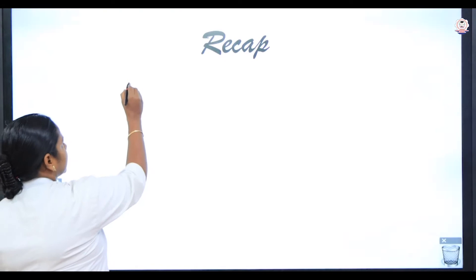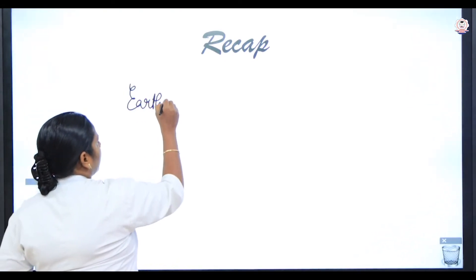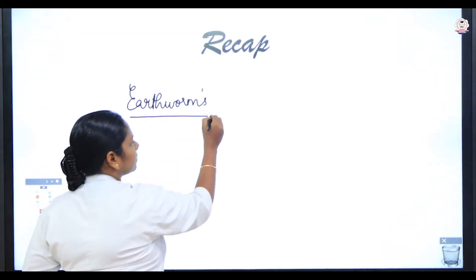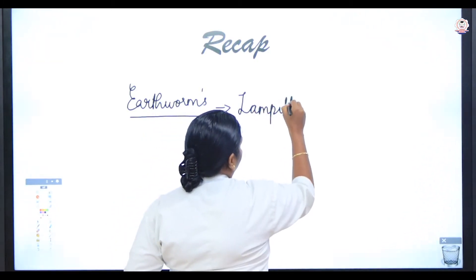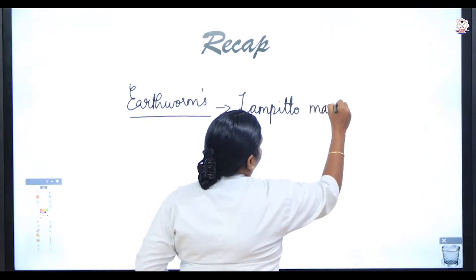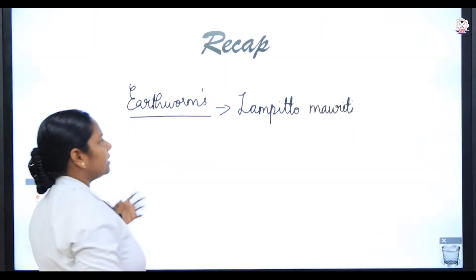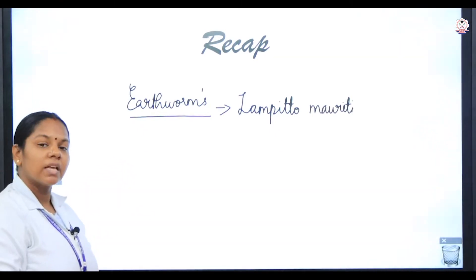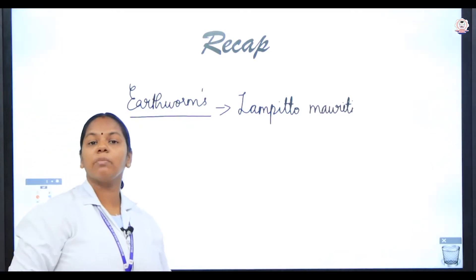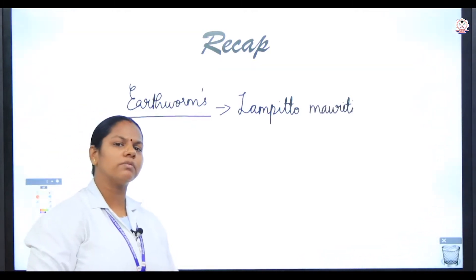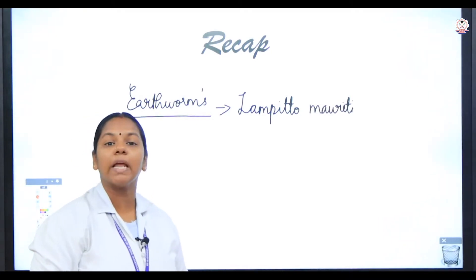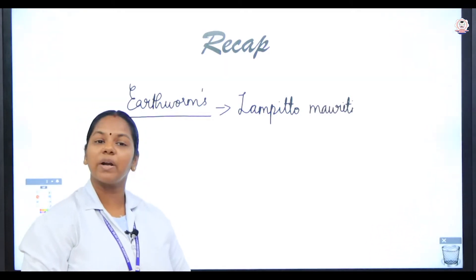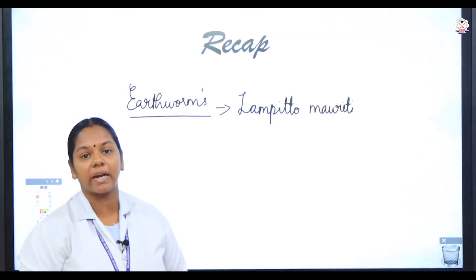In the previous session we discussed about the Earthworm — the scientific name of Earthworm is Lampito mauritii. We also discussed the reproductive system, excretory system, life cycle, and the economic importance of the earthworm. The growth of earthworms is called vermiculture, and it is helpful in making vermicompost, which is nowadays very useful for persons interested in organic farming.